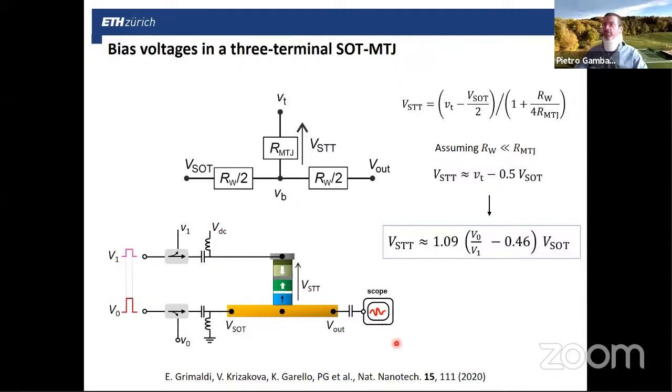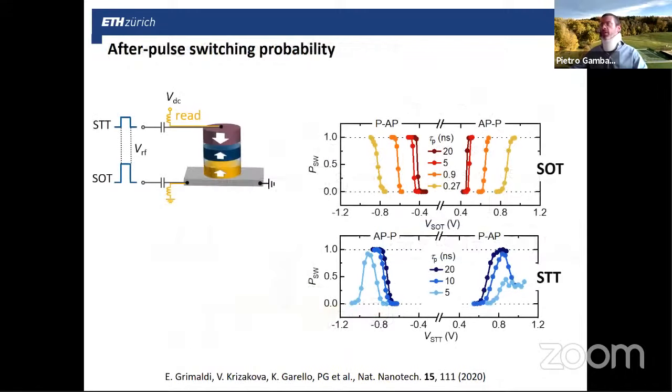At the end of the device, then we connect the device to a fast oscilloscope to detect the voltage during the switching. One thing that is not always obvious—I mean, it is obvious, but it's not always considered in the literature—is the fact that when one applies the pulse, the effective voltage drop across the pillar is not just determined by the voltage applied to the top pillar, but it also depends on the voltage applied to the bottom pillar. You have like a voltage partition here. For our devices, this gives this dependence of the V_STT bias to the V_SOT bias.